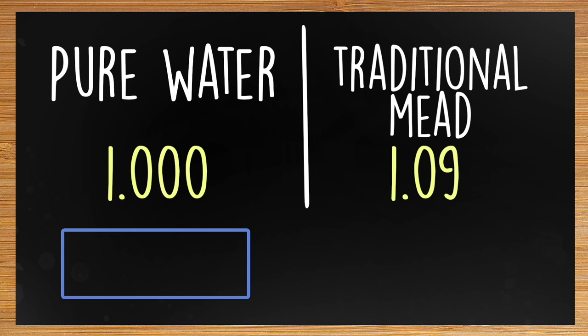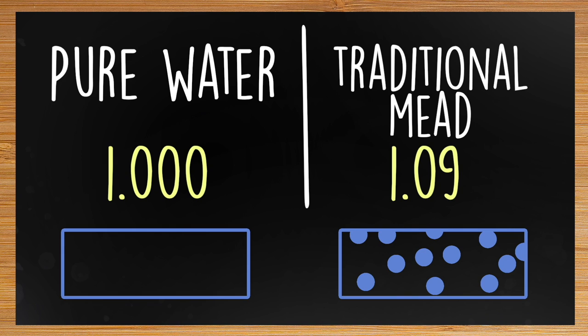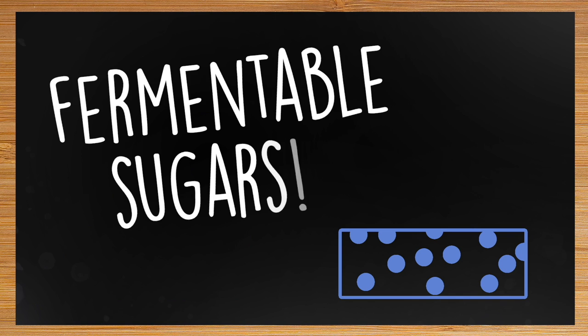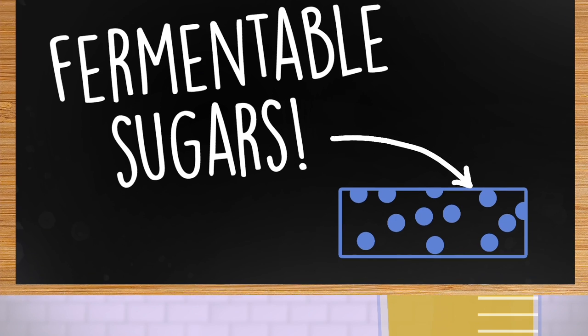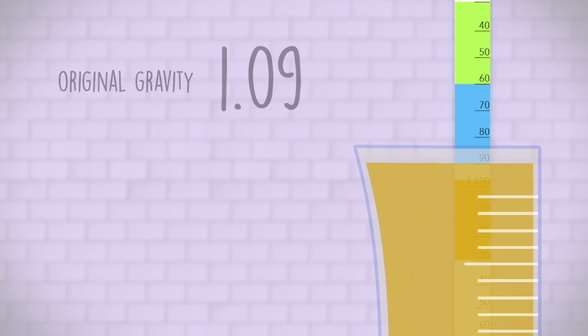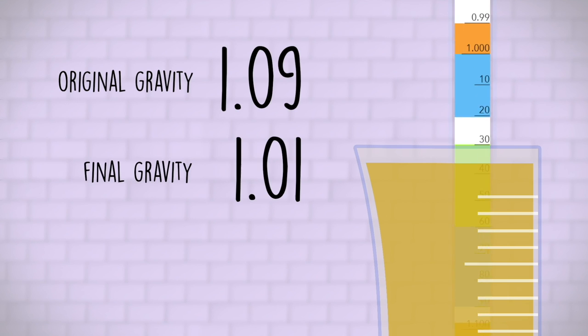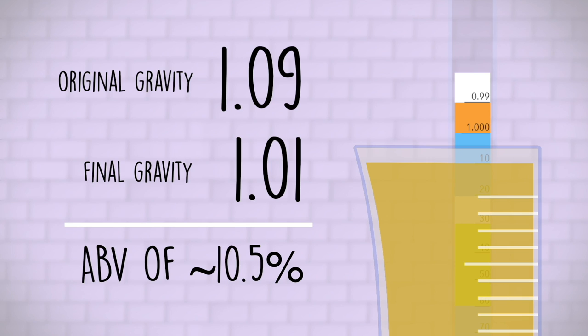The higher reading means the liquid is denser than water, which in homebrewing is used to approximate the amount of fermentable sugars in your must. As fermentation progresses, your hydrometer reading should creep closer and closer to 1.0. So in our traditional mead example, if the reading started at 1.09 and ended at 1.01, you finished at about 10.5% alcohol by volume, with a hint of residual sweetness remaining.